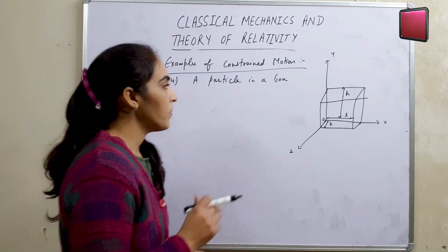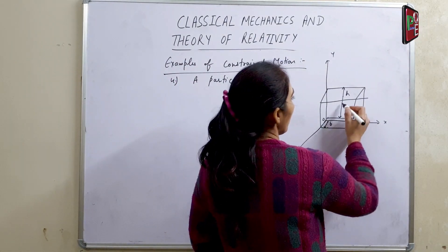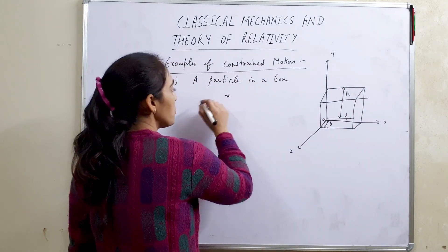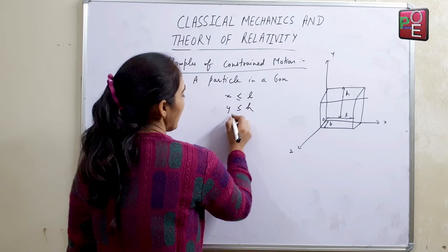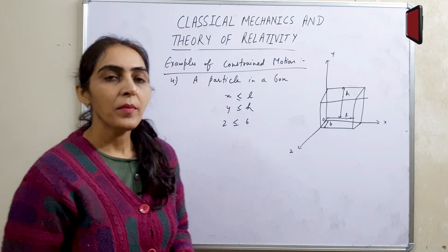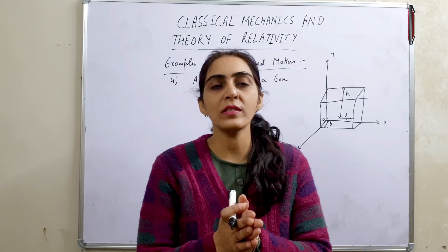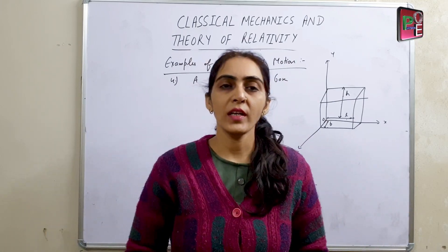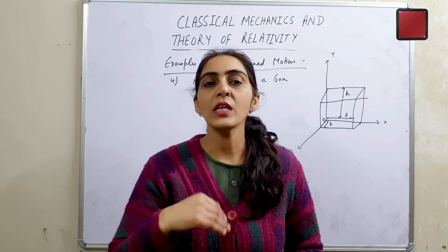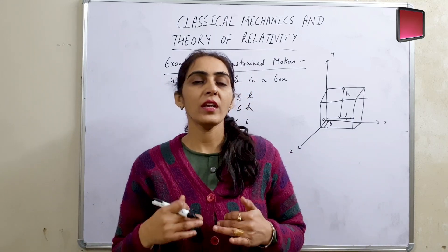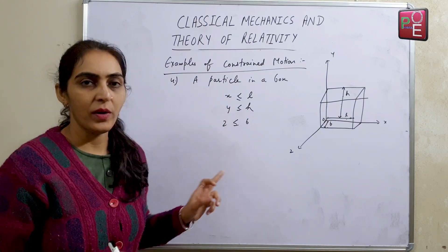Particle in a box is an example of constrained motion। एक particle cubical box के अंदर है जिसकी length L, breadth B, height H है। Particle का motion: x direction में ≤ L, y direction में ≤ H, z direction में ≤ B। Particle उस box की dimensions से ज़्यादा move नहीं कर सकता — यह constrained motion का example है।